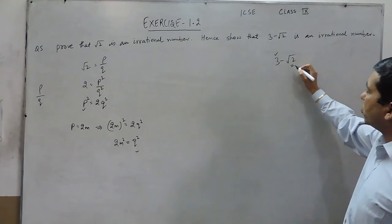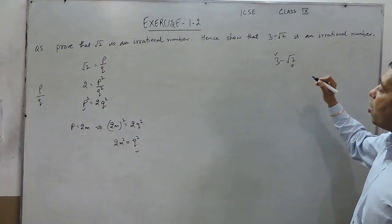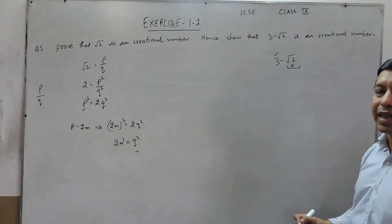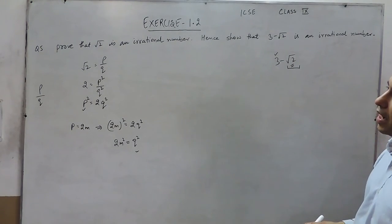3 - √2: √2 is an irrational number, which is non-terminating, non-repeating decimal. And when these are non-terminating, non-repeating decimal, that means 3 - √2 is also an irrational number.